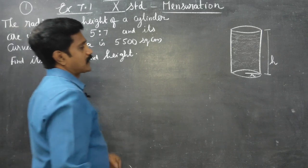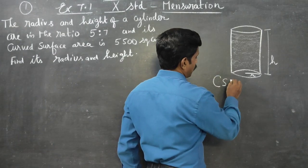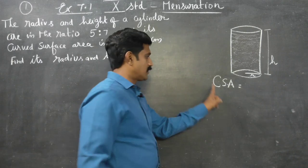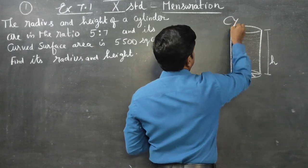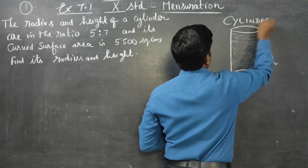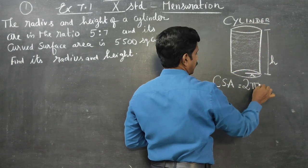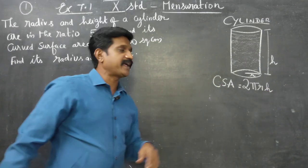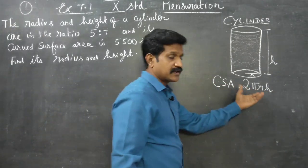Today we are going to use the first formula: CSA means curved surface area of a cylinder. The curved surface area of a cylinder is 2πrh.